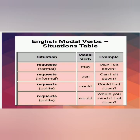Now let's see the situation table for modal verbs. For formal requests we use may — 'May I sit down?' For informal requests we use can — 'Can I sit down?' For polite requests we can use could — 'Could I sit down?' or 'Would you mind if I sit down?' So for requests we can use may, can, could, and would.